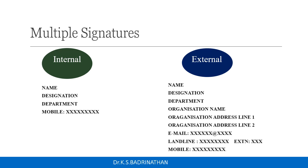In that scenario, it's enough to have a minimum number of details like your name, designation, department, and mobile number. The other scenario is external email, where you'll be sending it to your client, vendor, or supplier — whatever is outside of your organization. In that situation, you need to add additional information like the organization or company's name, address, landline number, email, etc.